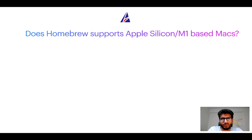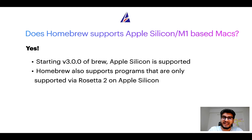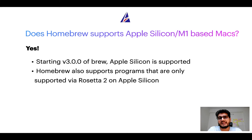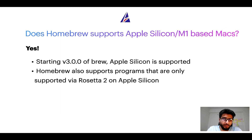Next question: can you use Homebrew to install programs on Apple Silicon, more popularly known as M1 MacBooks? Again, yes. Starting with version 3.0 of brew, Apple Silicon is now supported. In fact, Homebrew also supports programs that are at the moment only supported via Rosetta 2 on Apple Silicon. Now that I have answered your questions on safety and compatibility of Homebrew, let's get to the installation process.